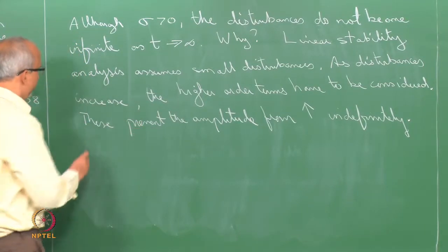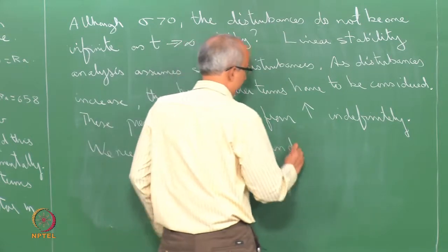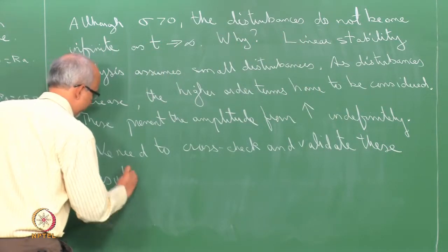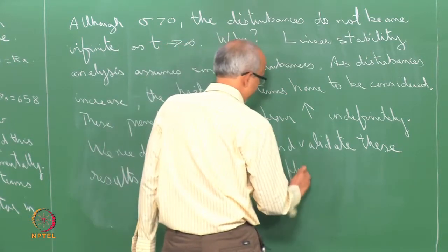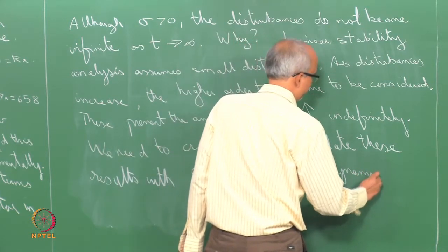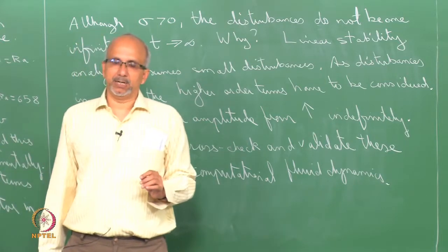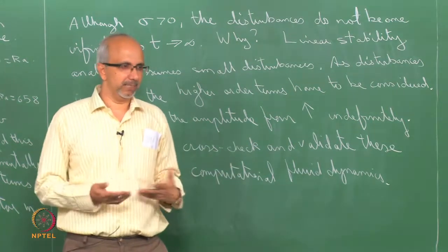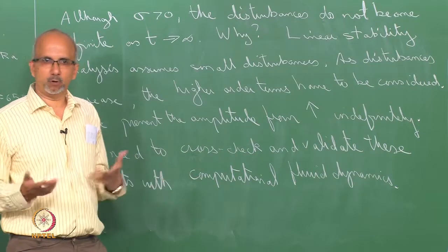Those errors in the 5th or 6th decimal place are actually going to act as a disturbance. Cross-checking with computational fluid dynamics serves to benchmark both approaches. If your CFD tells you there is no convection up to Rayleigh 800, but the linear stability says 657, you know there is a problem somewhere — this kind of consistency check gives you confidence.